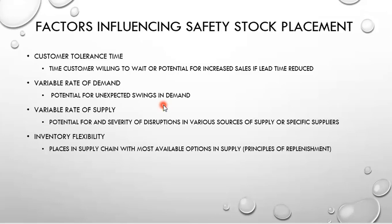Variable rate of demand is the potential for unexpected swings in demand — a lot of our calculations deal with constant demand. This deals with demand variation, rate of supply variation, and inventory flexibility. Management basically says: based upon these four main factors, we're going to determine how many sigmas from the mean we want to calculate to have product for the customer. If you have a customer that's willing to wait, you may use a smaller sigma, assuming some customers will wait — so you won't have inventory sitting there waiting for them.